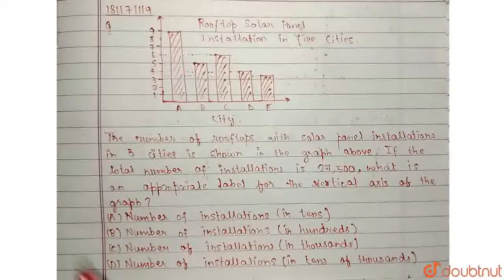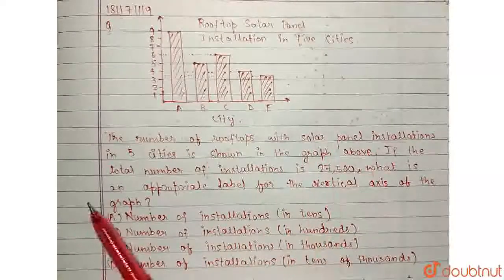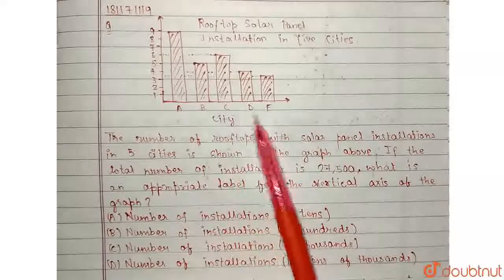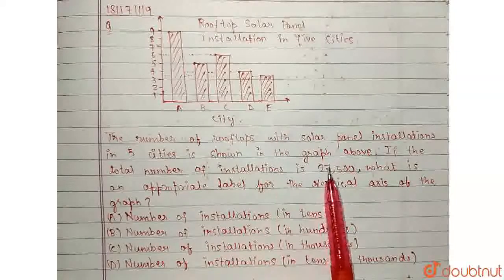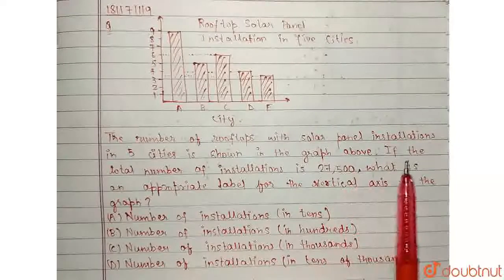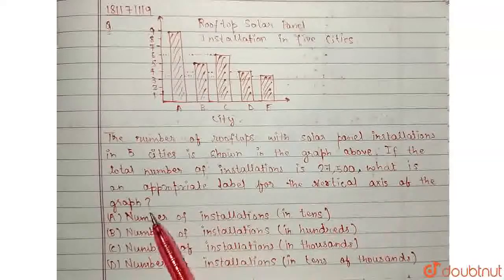Hello, the question is: the number of rooftops with solar panel installation in 5 cities is shown in the graph above. If the total number of installations is 27,500, what is an appropriate label for the vertical axis of the graph?